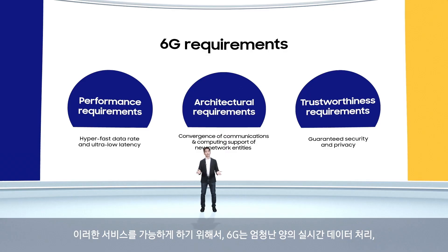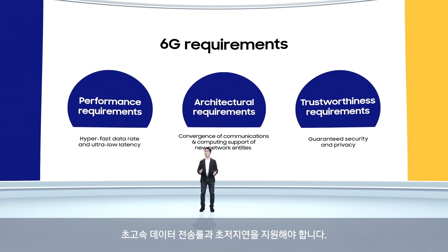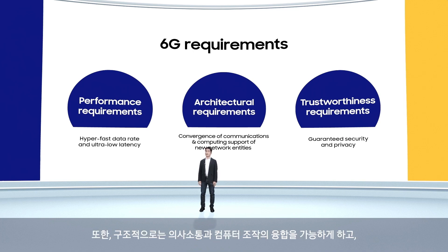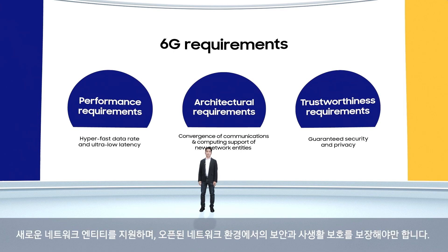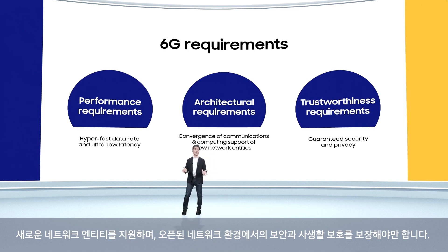To enable such services, 6G should support a tremendous amount of real-time data processing, hyper-fast data rate, and extremely low latency. And architecturally, it should also enable convergence of communications and computing, support of new network entities, and guarantee security and privacy in an open network environment.